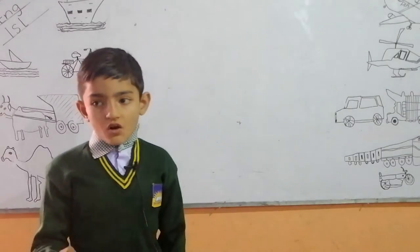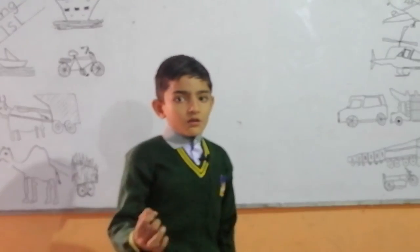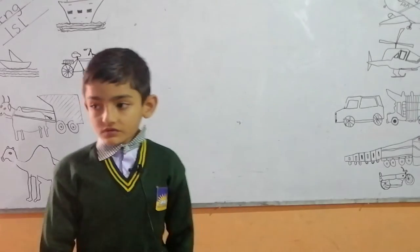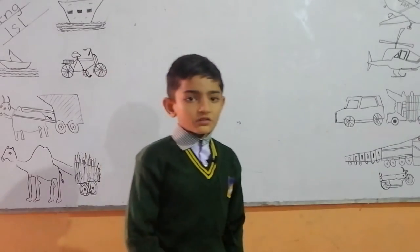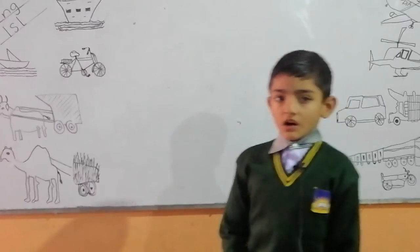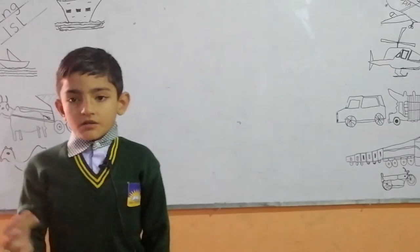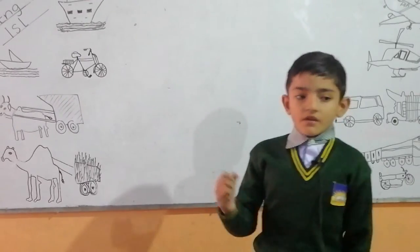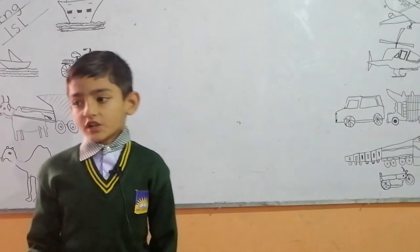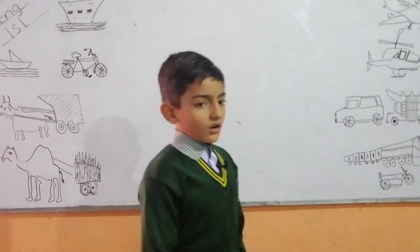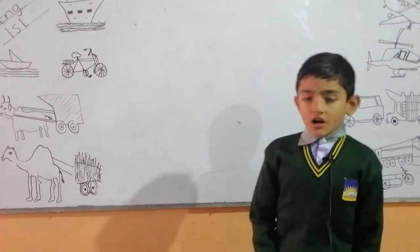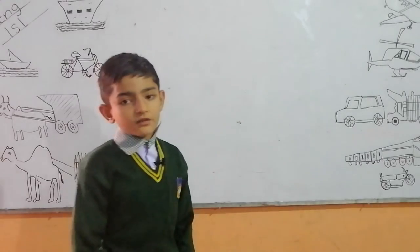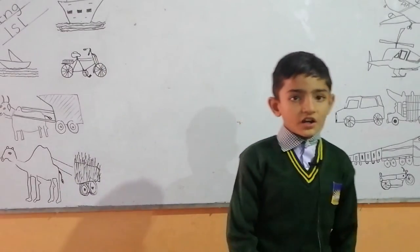Old means of transport are tonga, bicycle, bullcart, and camel. Modern means of transport are car, bus, train, van, and ship. Modern means of transport have made life very easy. Thanks.